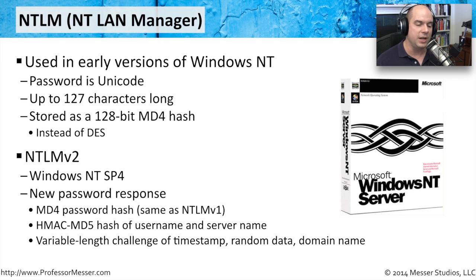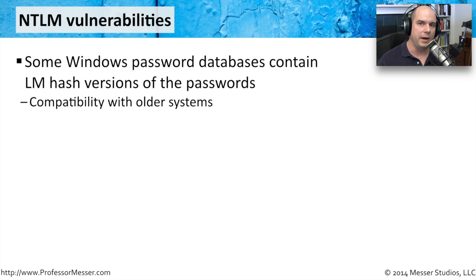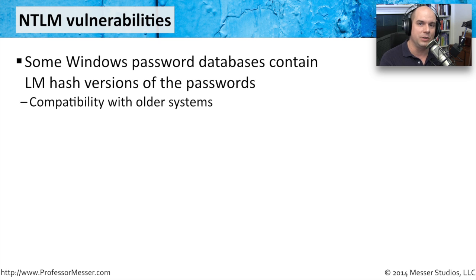There was also a variable-length challenge sent that includes a timestamp, some random data, and domain name information — making the authentication conversation more secure. However, because there were two versions of NTLM, older systems needed to be able to authenticate. Unfortunately, a number of legacy systems kept not just the more secure NTLM version 2 password, but also the older, insecure NTLM version 1 password as well.